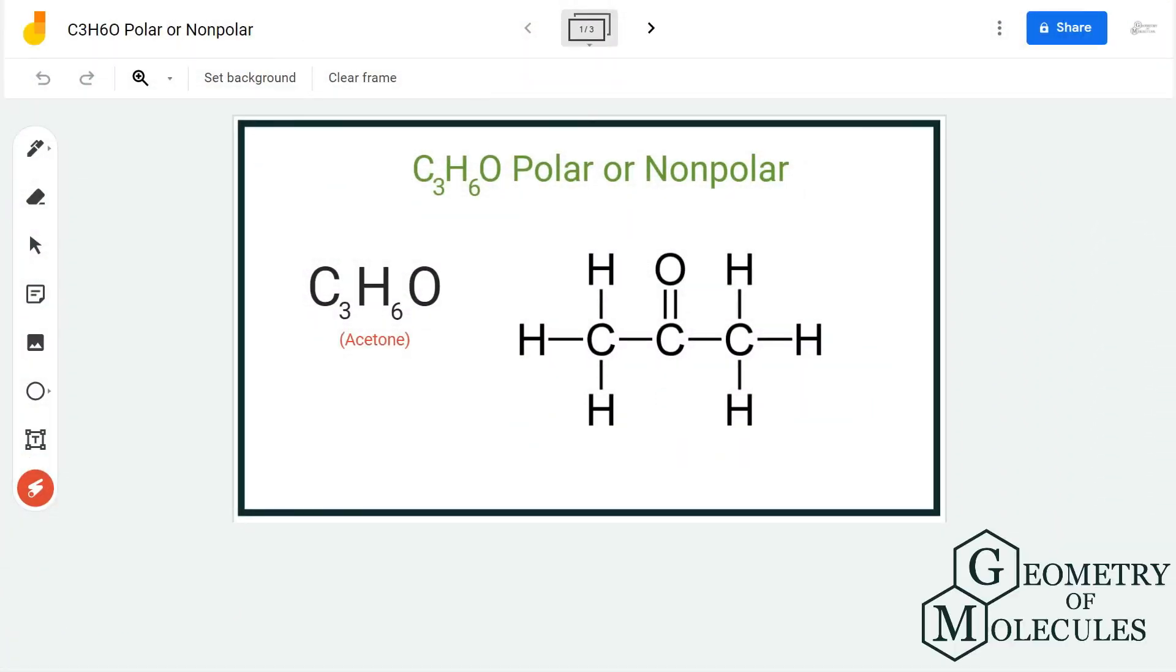Hi guys, today in this video we are going to find out if C3H6O, or what is also known as acetone, is polar or nonpolar. To understand its polarity, we are first going to look at its Lewis structure, followed by its shape, and then check if there is a net dipole moment in this molecule.